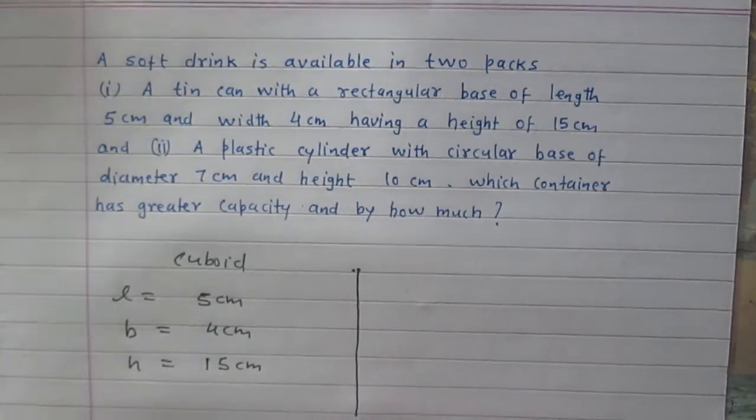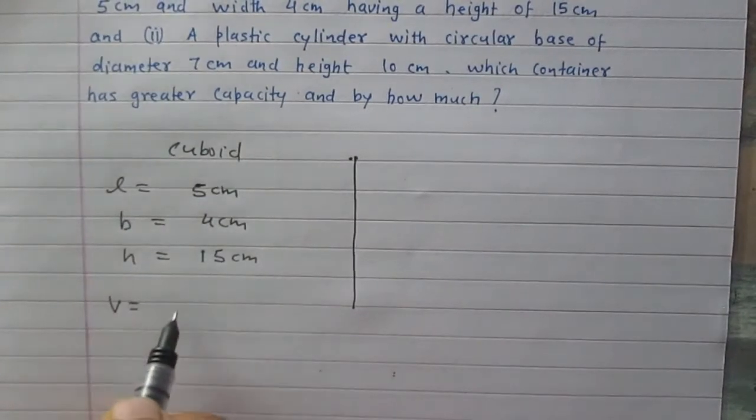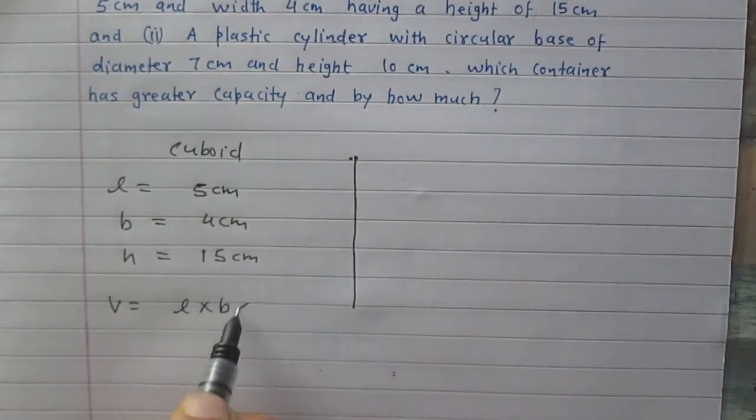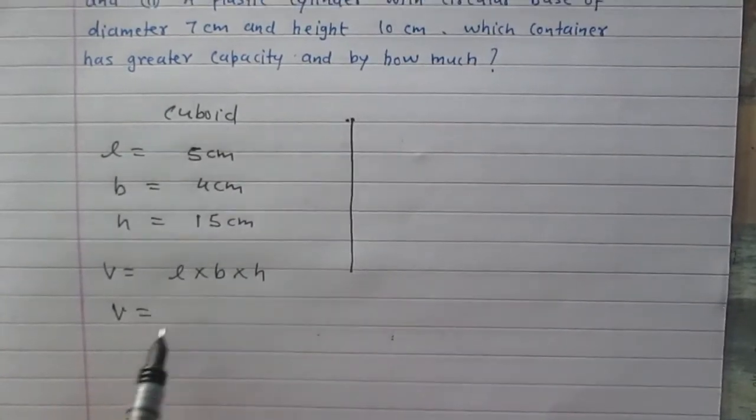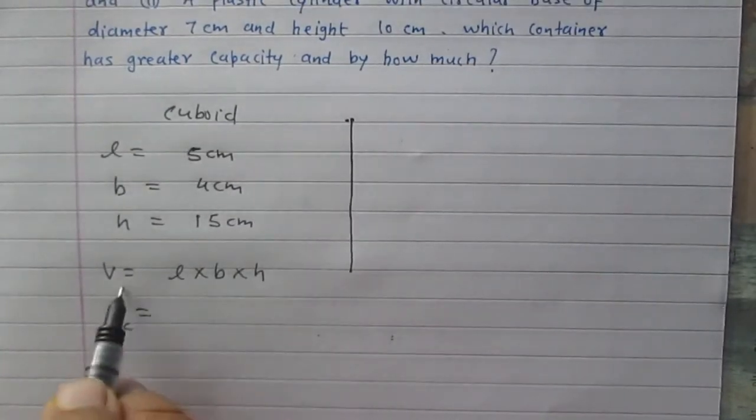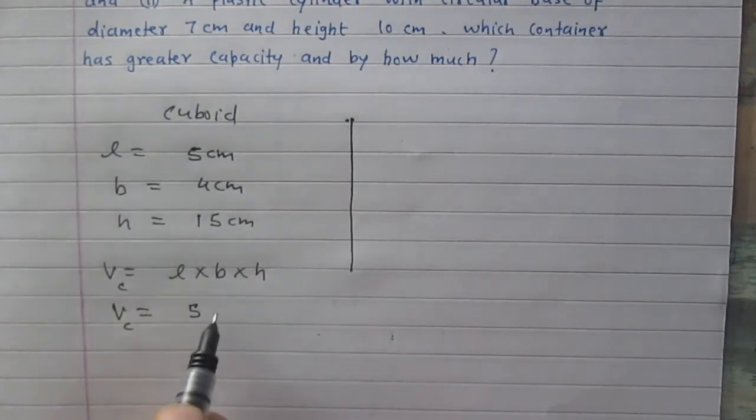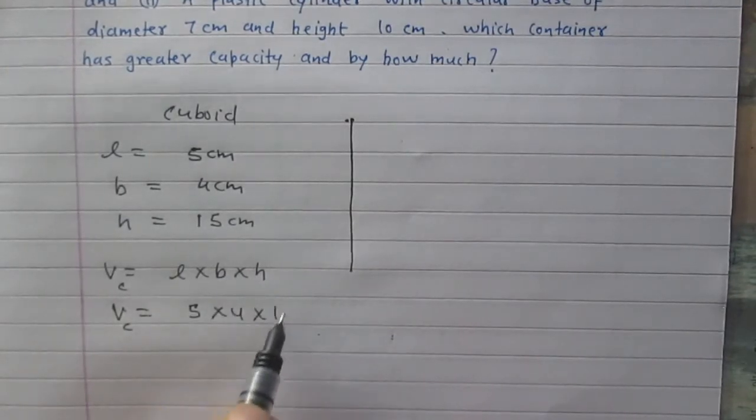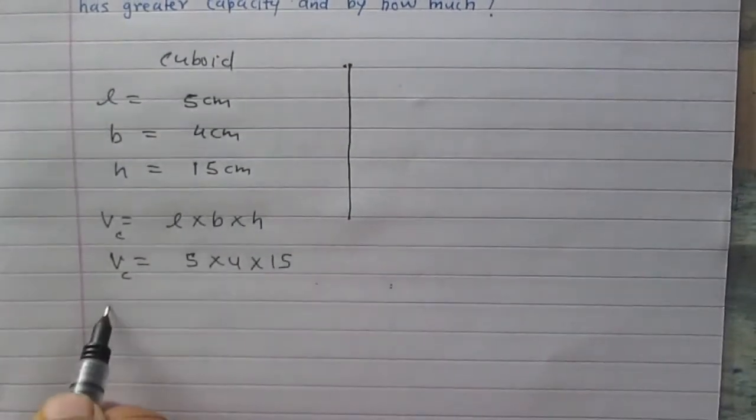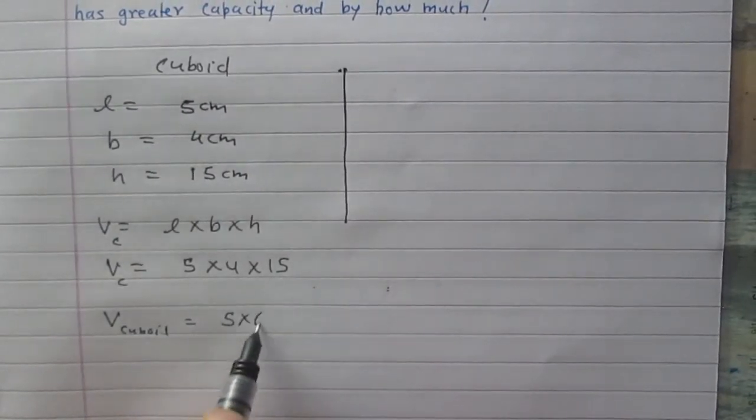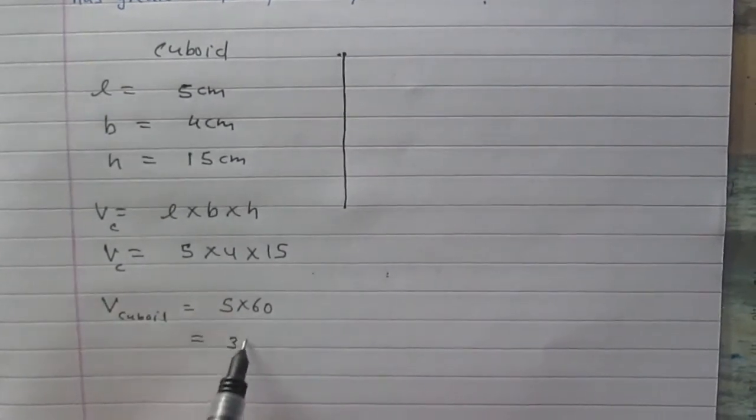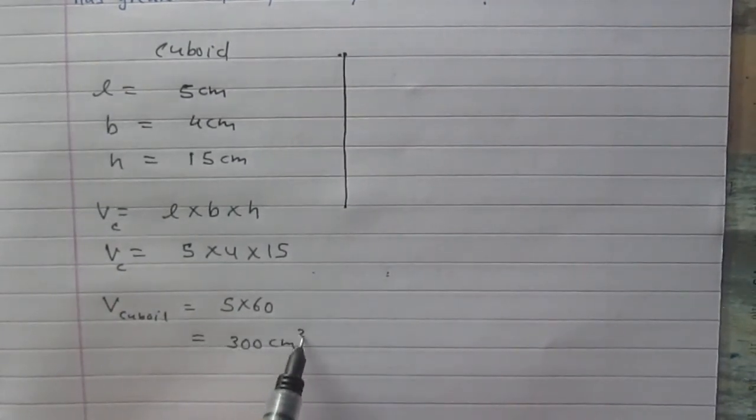We know that the volume of a cuboid is length multiplied by breadth multiplied by height. So the volume of this cuboid is 5 × 4 × 15, which equals 5 × 60, or simply 300 cm³.